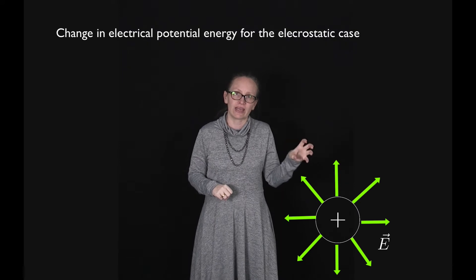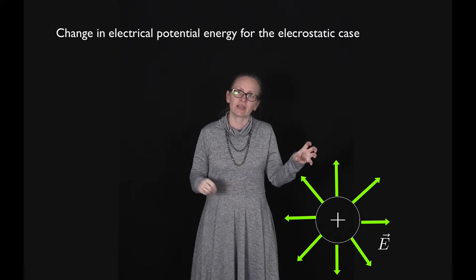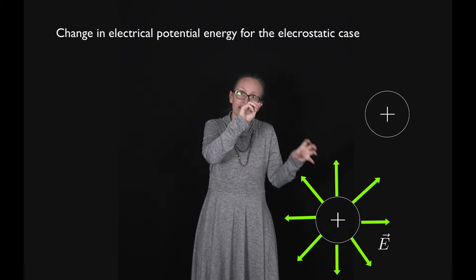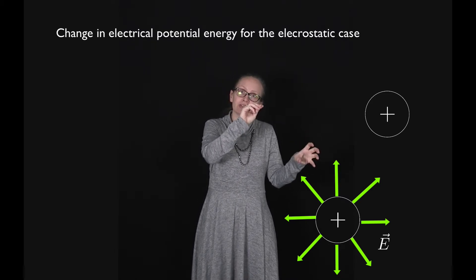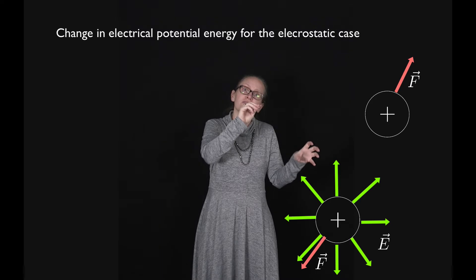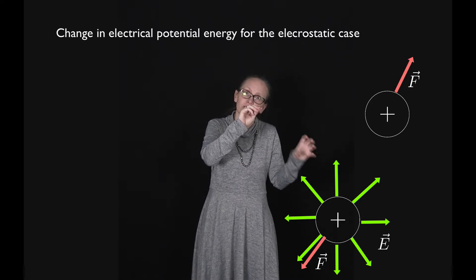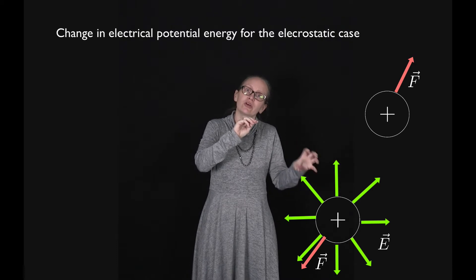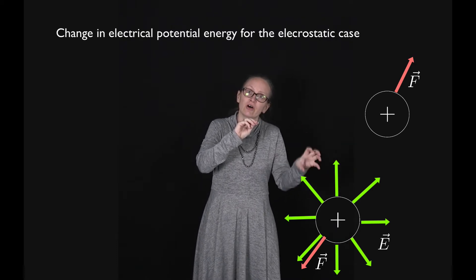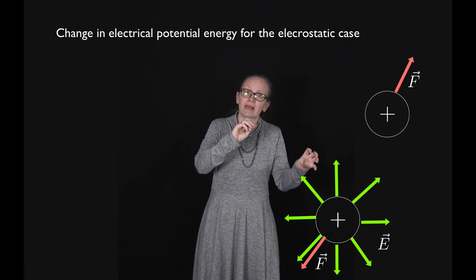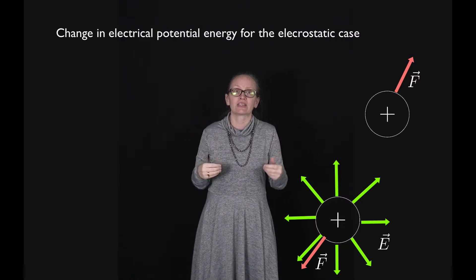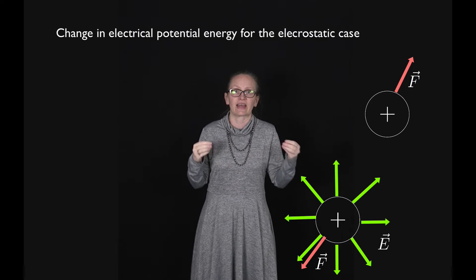Imagine that we had a charged particle here which is creating an electric field. If we bring another charged particle into the field created by this electric field, both these particles apply a force on each other. So this force could cause this original particle to move. But we're neglecting that now. We are assuming that this original particle is not free to move so it's locked in place and the electric field is not changing. So this is why it's known as the electrostatic case.